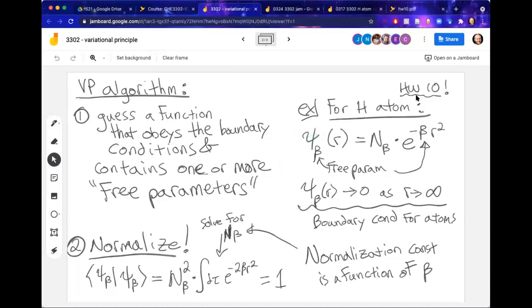So after guessing the function, the first thing we always do is normalize. And so in order to do this, we're going to take our guess and plug it into the normalization expression. That means I'm going to have to integrate over all space, and ultimately I'll have to solve for the normalization constant N_beta. But it's important to recognize that that normalization constant is a function of this parameter. So in this way, we can change the value of beta, and that changes the behavior of our function. Any questions so far?